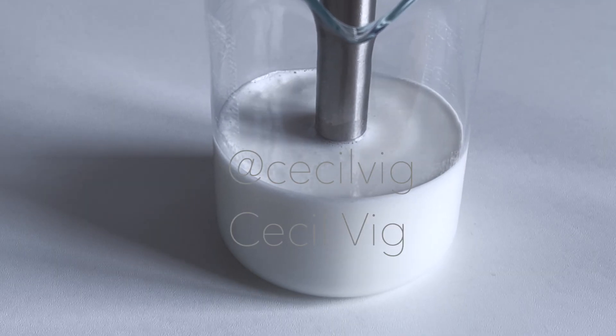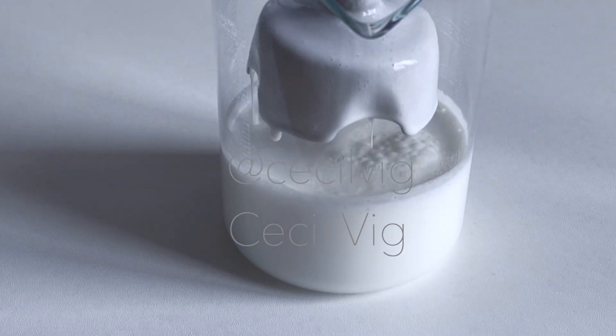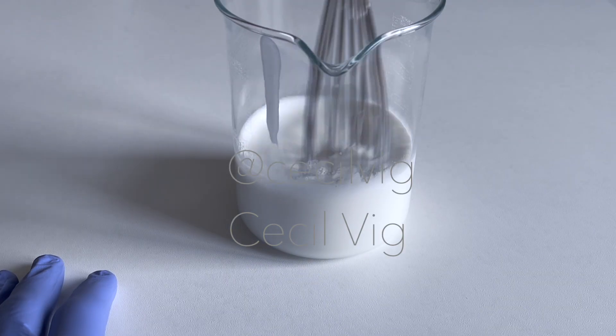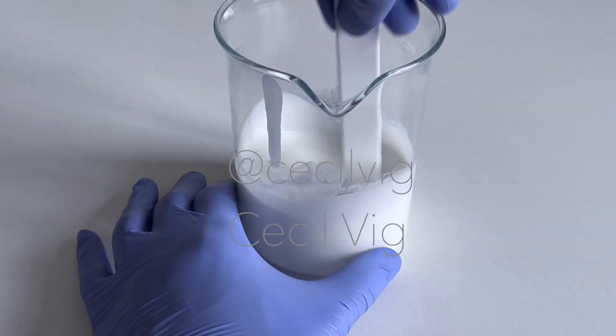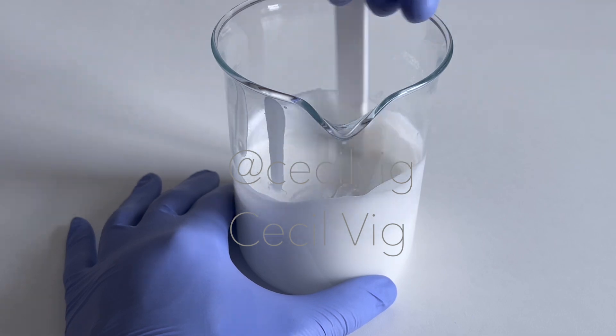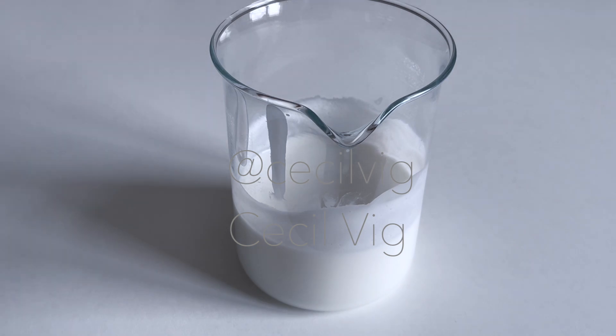When the mixture is homogenized, I continue to mix with a hand whisk and then with a spatula until the mixture thickens. As I mix, I check the temperature, and when it is around 40 degrees Celsius, I start to add the heat-sensitive ingredients.